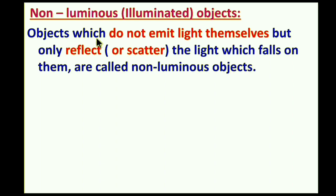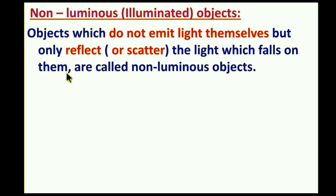The second type is non-luminous objects. Objects which do not emit light themselves, but only reflect or scatter the light which falls on them, are called non-luminous objects.